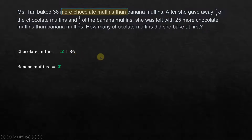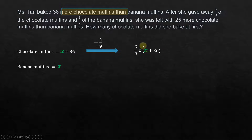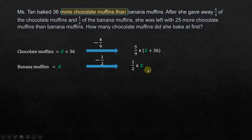So x plus 36 is the number of chocolate muffins. She gave away 4/9 of the chocolate muffins, so what is left is 5/9 of (x + 36). Out of 9/9, we took 4/9, so 5/9 remains. For banana muffins, we take away half, so out of 2/2 we took 1/2, and the remaining is 1/2 of x.